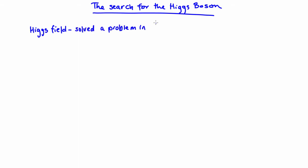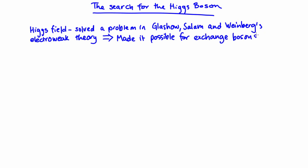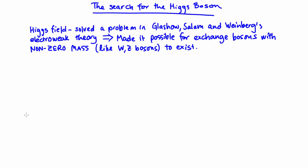Glashow, Salam, and Weinberg used Higgs' ideas to generate massive W and Z bosons in their electroweak theory, which made everyone reasonably happy. Except for one thing: there was no experimental proof of the Higgs field's existence. Without it, the theory could have been simply a mask for underlying problems in the electroweak theory, which, aside from the mass problem, worked really well. As you can imagine, this was deeply troubling to physicists.